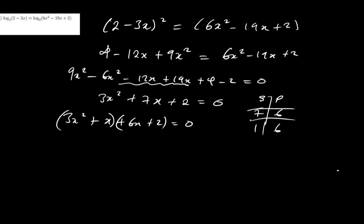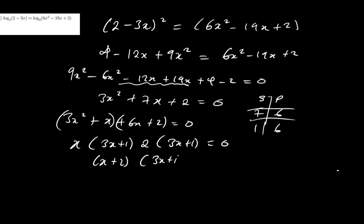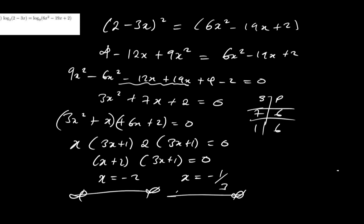Bringing everything to one side: 9x squared minus 6x squared minus 12x plus 19x plus 4 minus 2 equals zero, giving 3x squared plus 7x plus 2 equals zero. Using sum and product — sum is 7, product is 6, factors are 1 and 6. Splitting the middle term and factorizing by grouping: x(3x plus 1) plus 2(3x plus 1) equals zero, so (x plus 2)(3x plus 1) equals zero. Therefore x equals negative 2 or x equals negative 1 over 3.